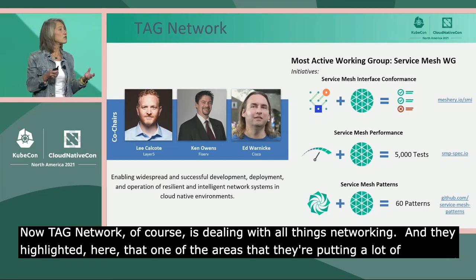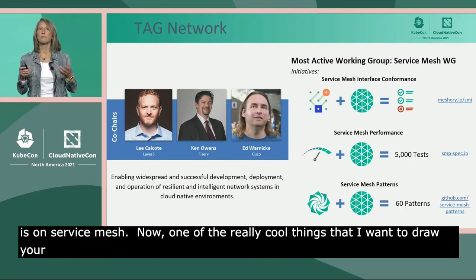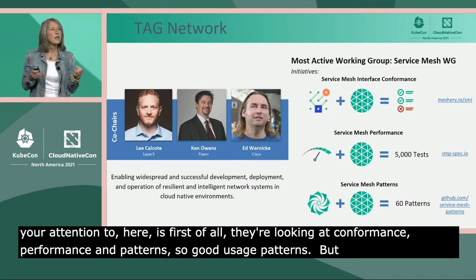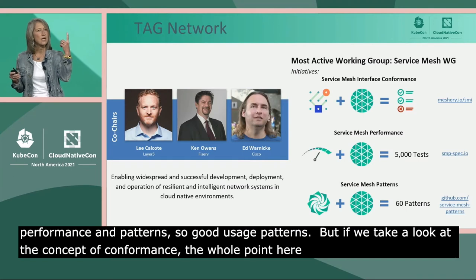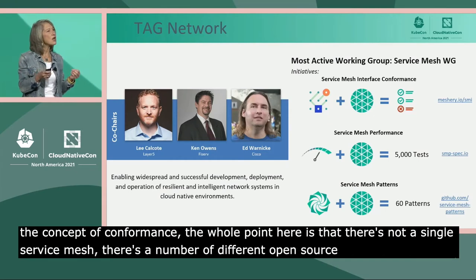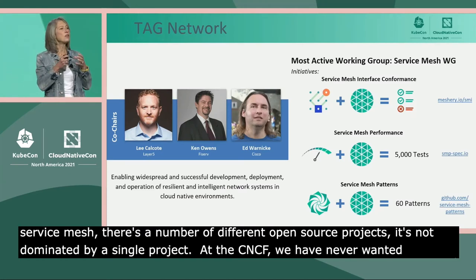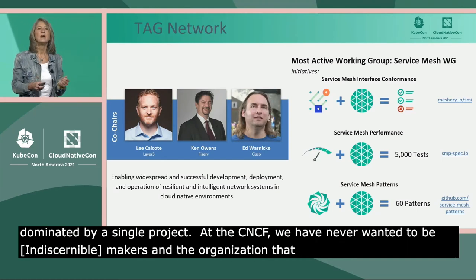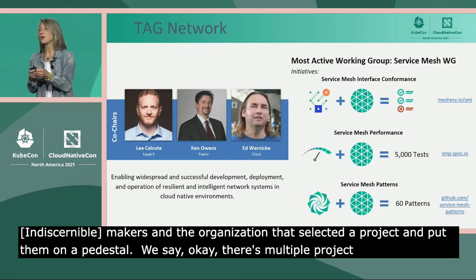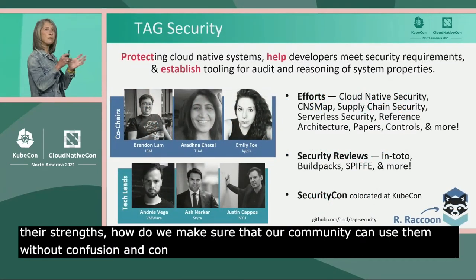One really cool thing about TAG Networking is their focus on conformance, performance, and patterns — good usage patterns. On conformance: the whole point is that there's not a single service mesh; there are a number of different open source projects, which is a sign of a really strong open source ecosystem not dominated by a single project. At the CNCF we have never wanted to be king-makers. Instead we say: there are multiple projects, each with their strengths — how do we make sure our community can use them without confusion? Conformance can help with that.